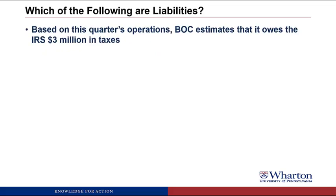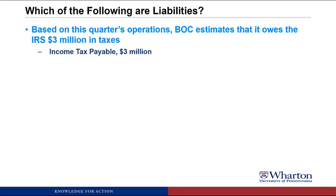Based on this quarter's operations, BOC estimates that it owes the IRS $3 million in taxes. This will be a liability called income tax payable. The government allowed us to operate our business, so we got the benefit of operating in this country, which creates an obligation to pay taxes. Even though we don't know exactly what the taxes are, we can estimate them with reasonable certainty at $3 million. So we would have a liability called income tax payable for $3 million.